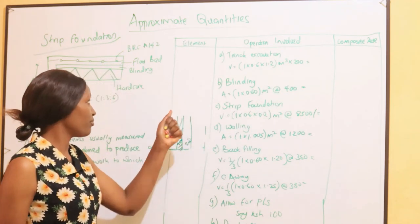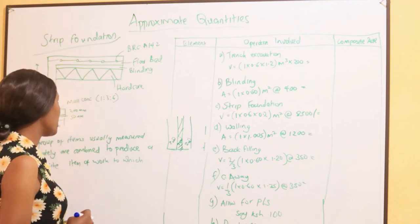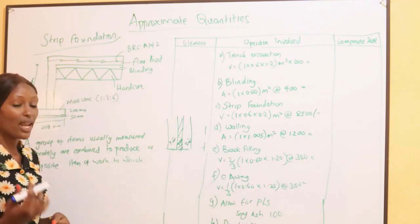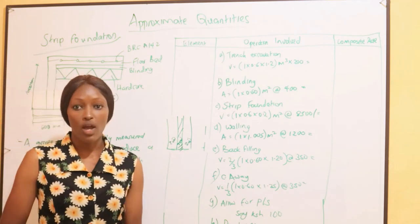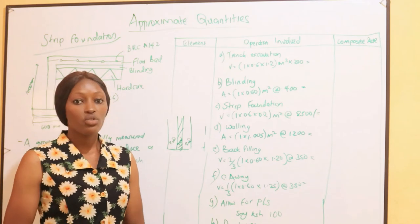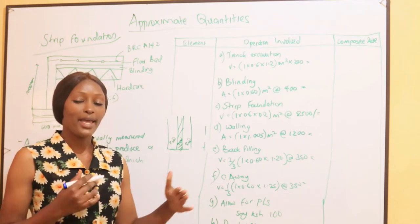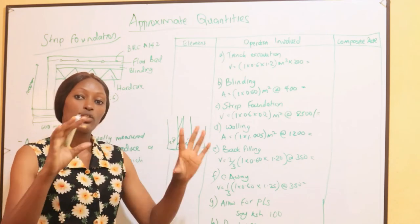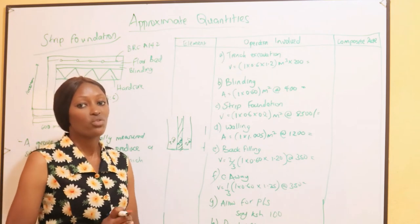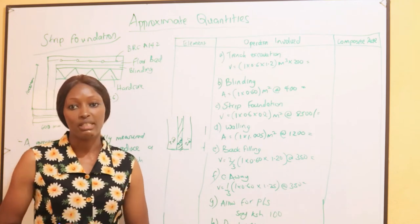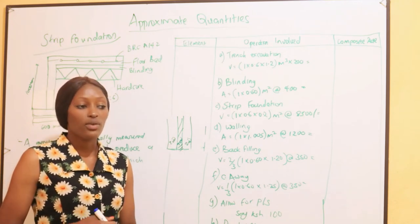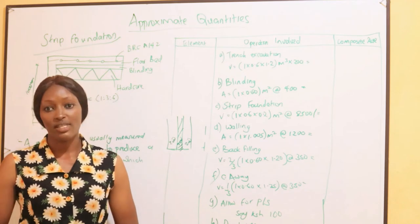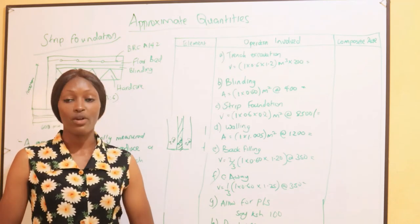Once we get all these costs, they form the composite rate for the strip foundation element. The approximate quantities method deals with the building element by element — after finding the cost for each element, we add them all together to get the total cost of the building. That is why it is the most accurate method when it comes to approximate estimation.